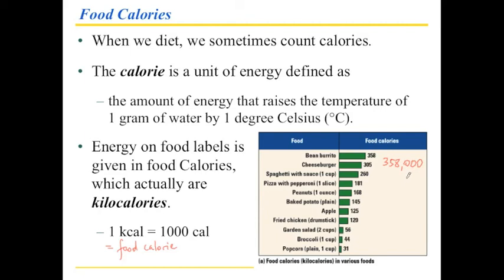People don't like to count thousands of anything, so they crossed out the zeros and just called those food calories. Looking at common foods like peanuts and apples, you realize that more heavily processed foods with more fat tend to have higher numbers of calories, because there are more energy-dense components — more bonds in carbohydrates, more bonds in lipids.